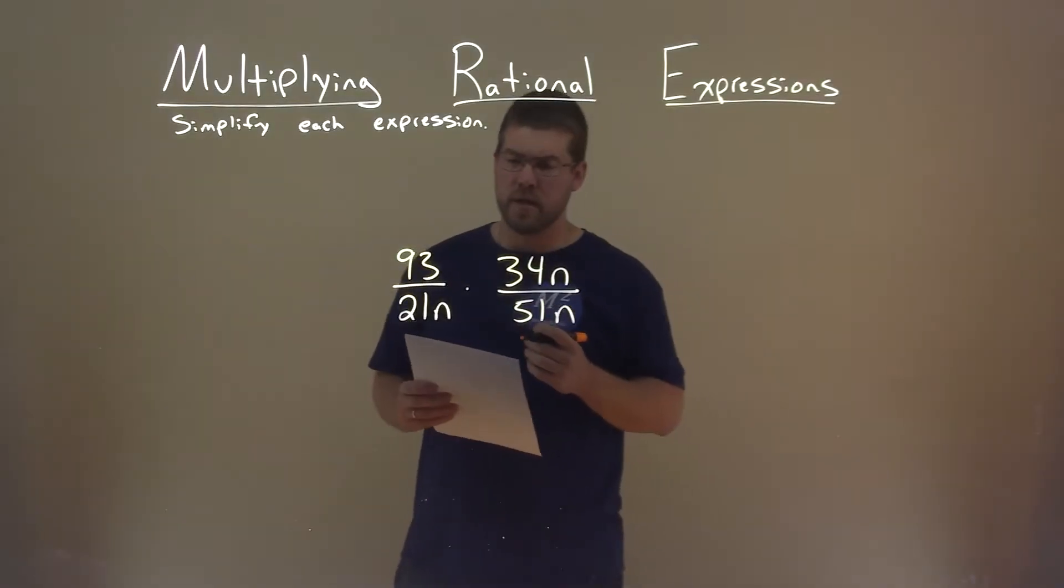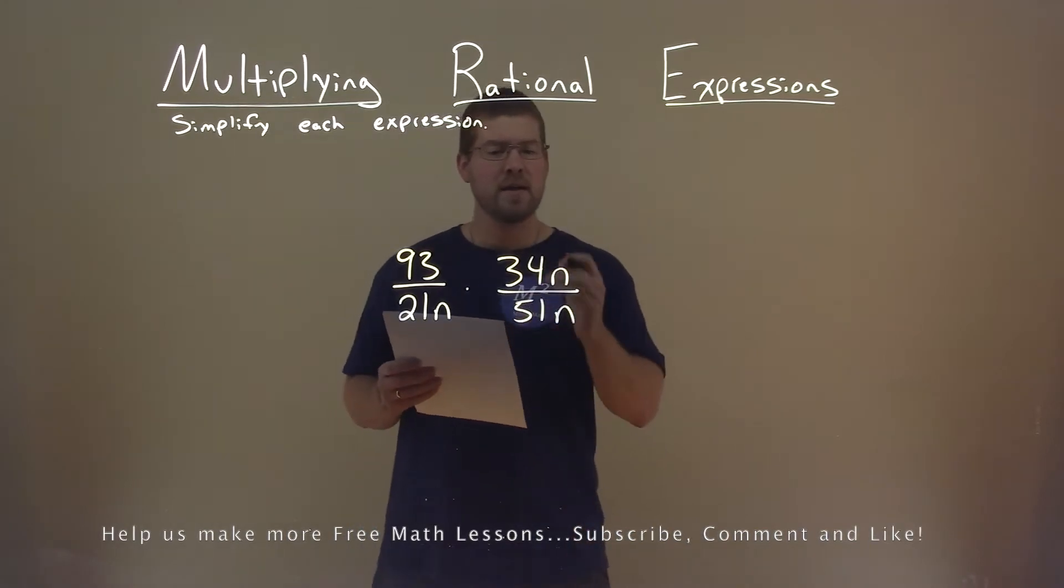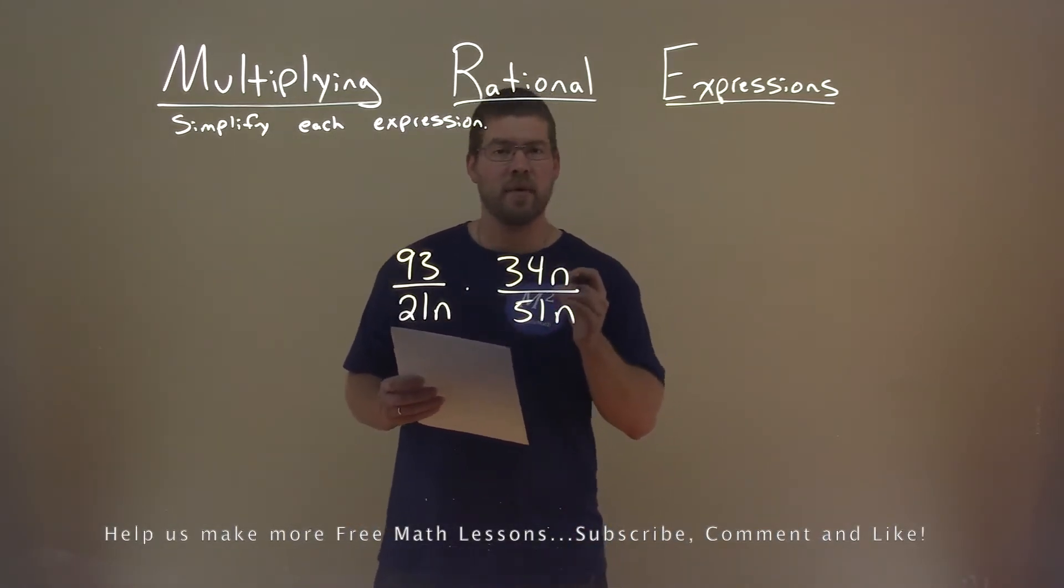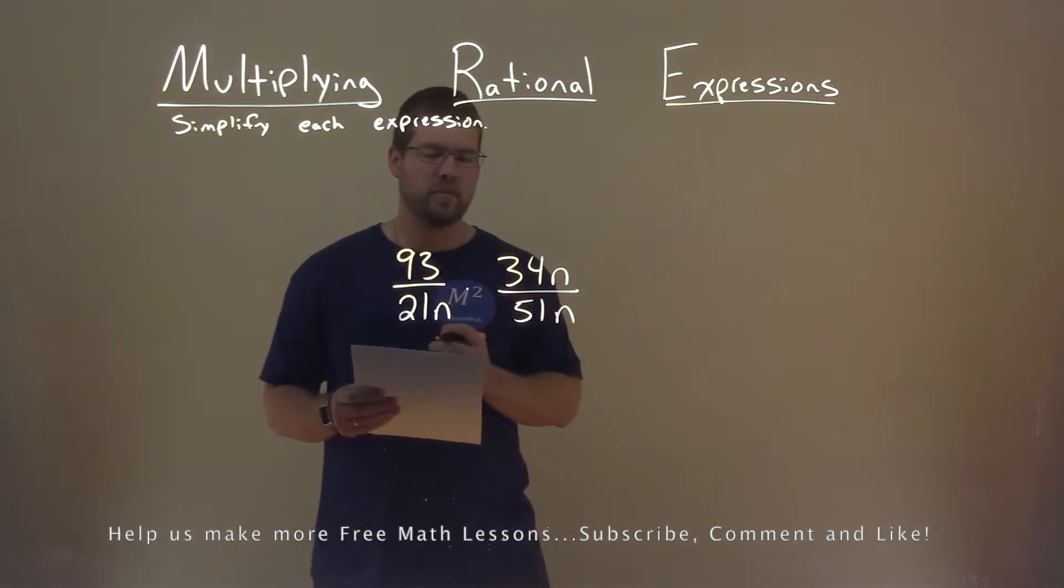We're given this expression right here: 93 divided by 21n times 34n divided by 51m, and we want to simplify this expression.